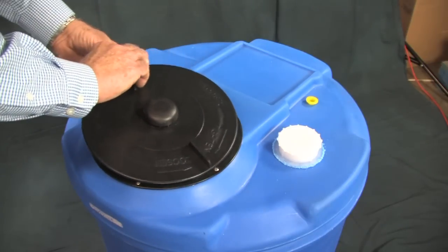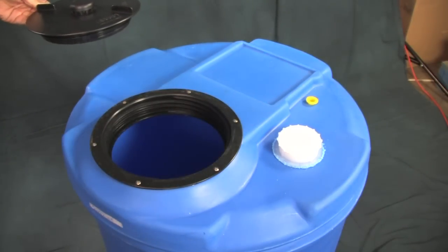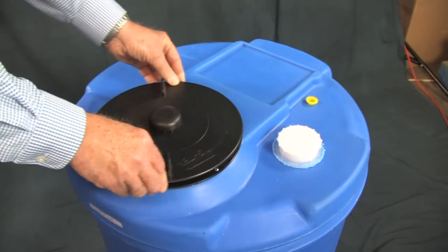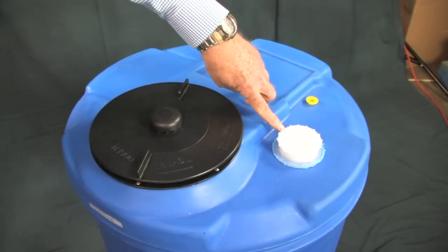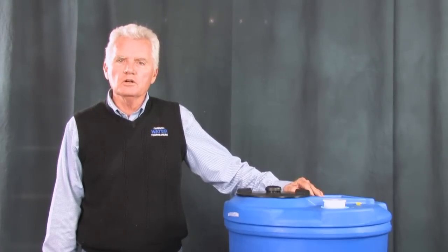Each tank comes with an 8-inch screw-off lid where you add the chemicals. It also has a 2-inch threaded opening where you can mount a flow level sensor so you can see where the chemical level is in the drum.